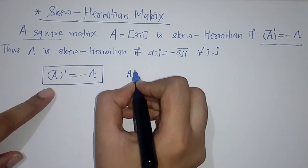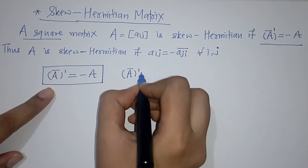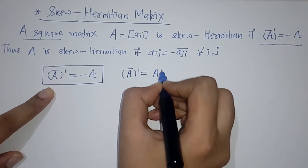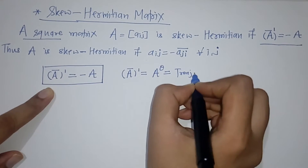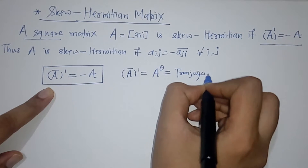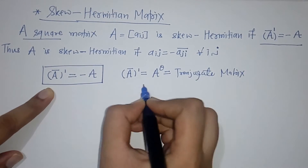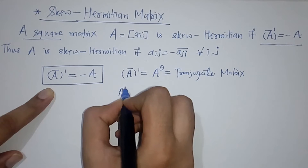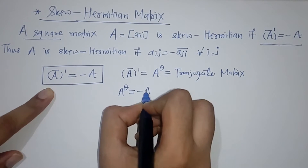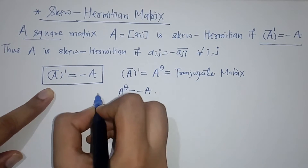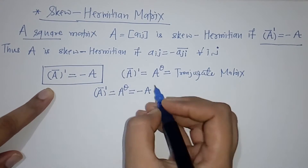We also denote the transpose of conjugate matrix as A raised to theta (A^θ), which is our conjugate transpose. So A is skew Hermitian if A^θ equals minus A — that is, A^θ is the transpose of the conjugate matrix.